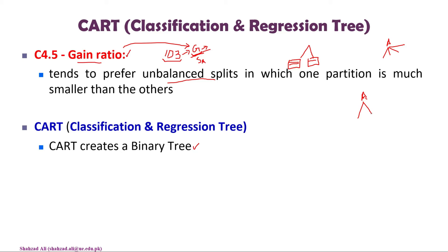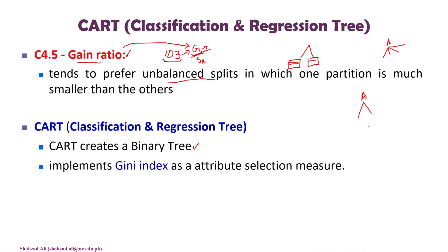Because CART creates a binary tree, it implements the Gini index as the attribute selection measure. The Gini index is used to rank attributes and assign scores to choose the best attribute. It is used to calculate how well an attribute splits the dataset.